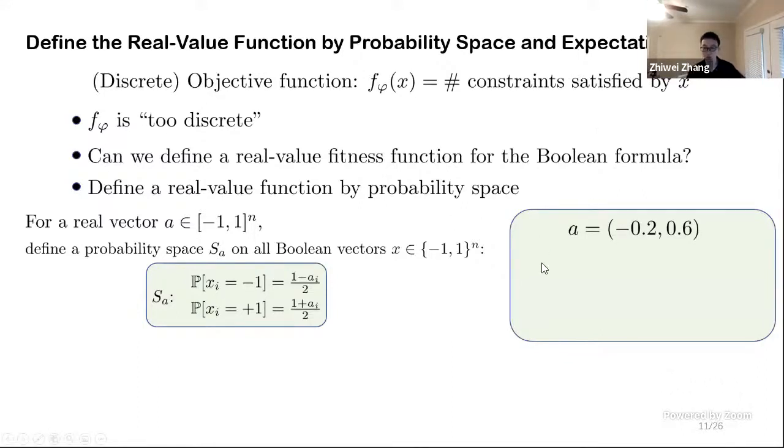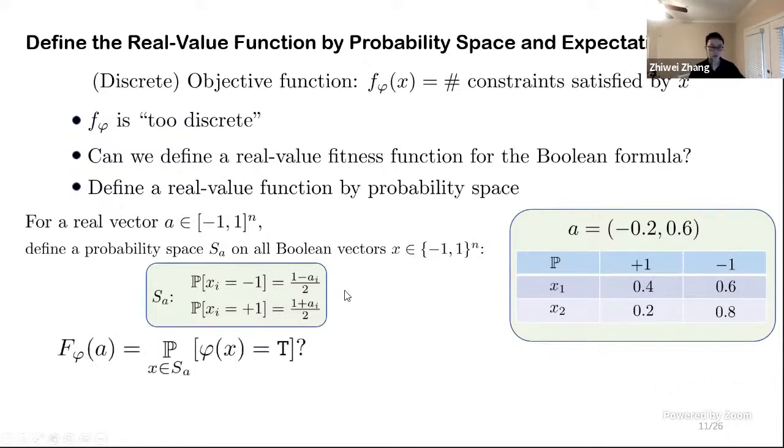A is a 2D real vector, and here is a probability table showing what's the probability of each variable taking some specific value. We can sample a Boolean vector from this table. So after we get this probability space, one of the ways that we can define our real value function is to use a probability that the formula is true under this probability space. This looks good, but unfortunately, this probability is sharply complete to evaluate because it reduces to the model counting problem.